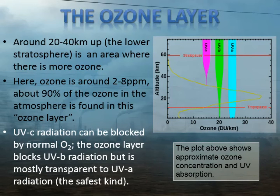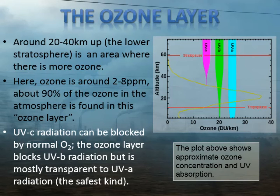Looking at the graph again, the different types of UV are coming in from the top. UV-C comes in and is very quickly absorbed — it is absorbed by normal O2, and as soon as it hits the ozone layer, it is all removed from the atmosphere. UV-B is absorbed quickly by ozone and around 80 to 90% of it is blocked by the time it reaches the ground — UV-B is what gives us sunburn. Imagine how bad your sunburn would be if that whole green bar reached the ground. Finally, UV-A is mostly unaffected by ozone and most of it actually reaches the ground, but fortunately for us, it's the safest kind.